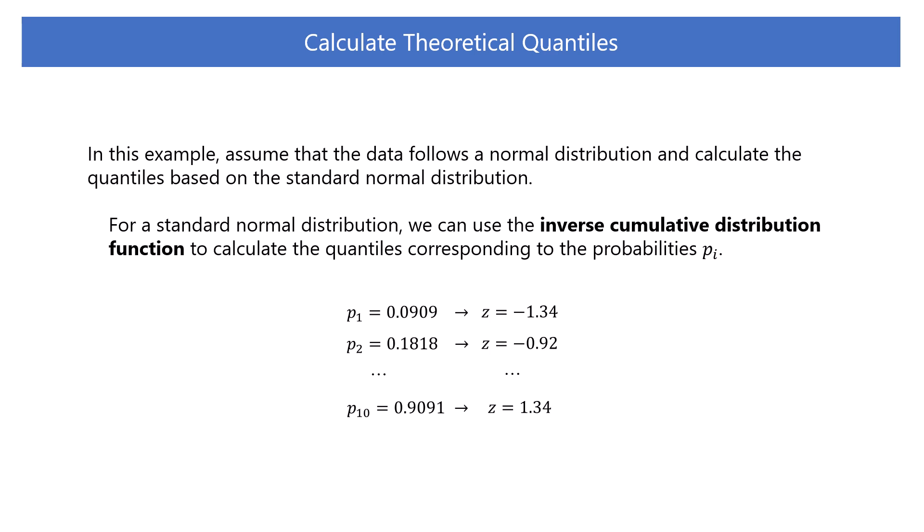For example, for p_1 equals 0.0909, we can calculate the z-score, that is, inverse CDF value, corresponding to that probability. We can find these z-scores using statistical tables or Python functions. These are the theoretical quantiles, based on the assumption that the data follows a normal distribution.